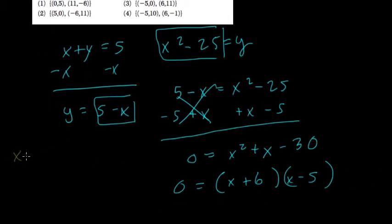So that means that x plus 6 could equal 0. Subtract 6. x is negative 6. Or x minus 5 could equal 0. Add 5, and x equals 5. So two points have to have the x values of 5 and negative 6.